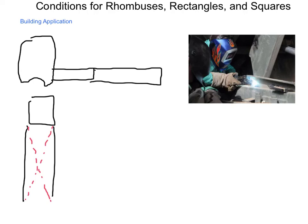He kept doing this until the string measured the same in both directions. Once he had that, he knew the diagonals would be congruent to one another, and if those diagonals are congruent, he was guaranteed to have a rectangular shape for the bed. You can also make sure things meet at a right angle at the center intersection and are the same length — that would give you a square.